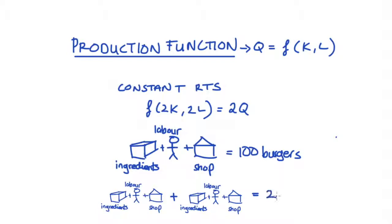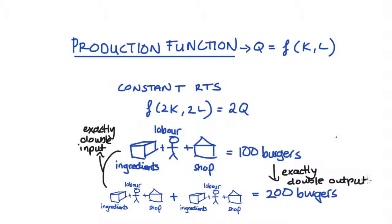Well, imagine then that we could produce, as a result of the doubling of the inputs, 200 burgers. We doubled all of our inputs and we got double the original output level. That's constant returns to scale: when the output increases by the same amount that we have increased our inputs to production.